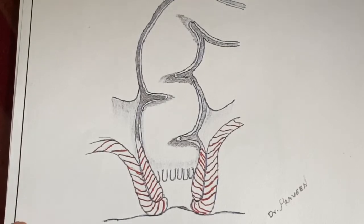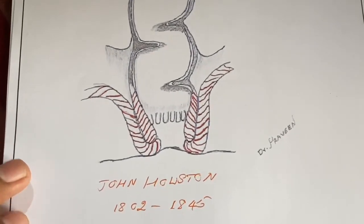Dear friends, John Houston has published his paper in the year of 1830. He published a description of the prominent mucosal folds that characterize the lumen of the rectum. He had a cerebral hemorrhage while giving a lecture to students and we lost him in the year 1845.